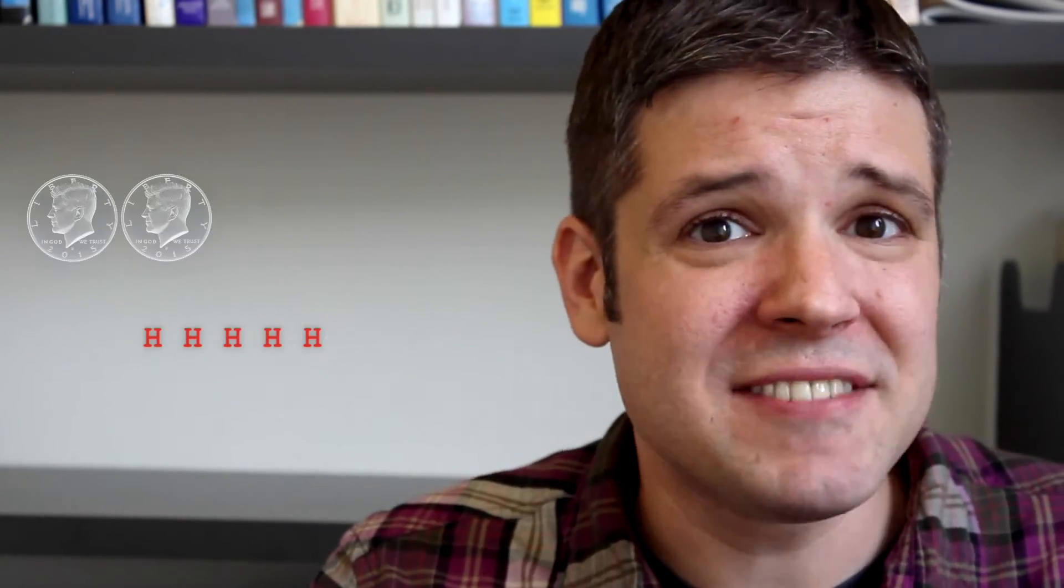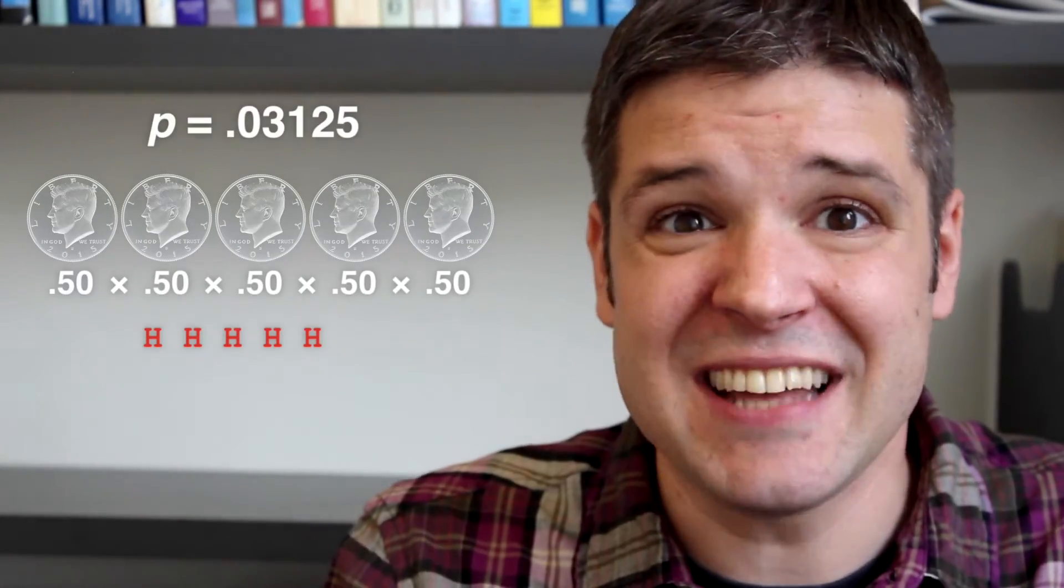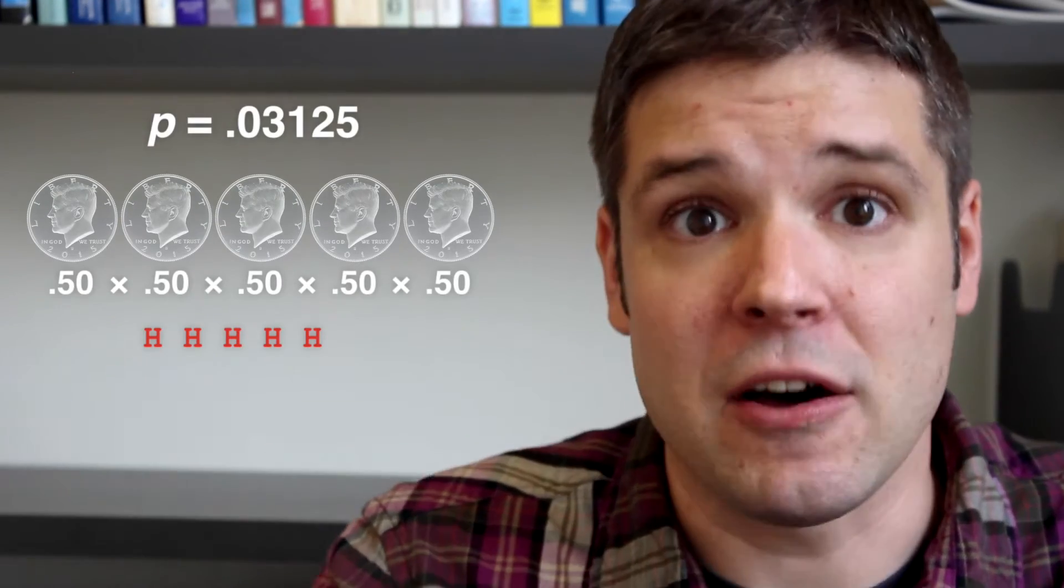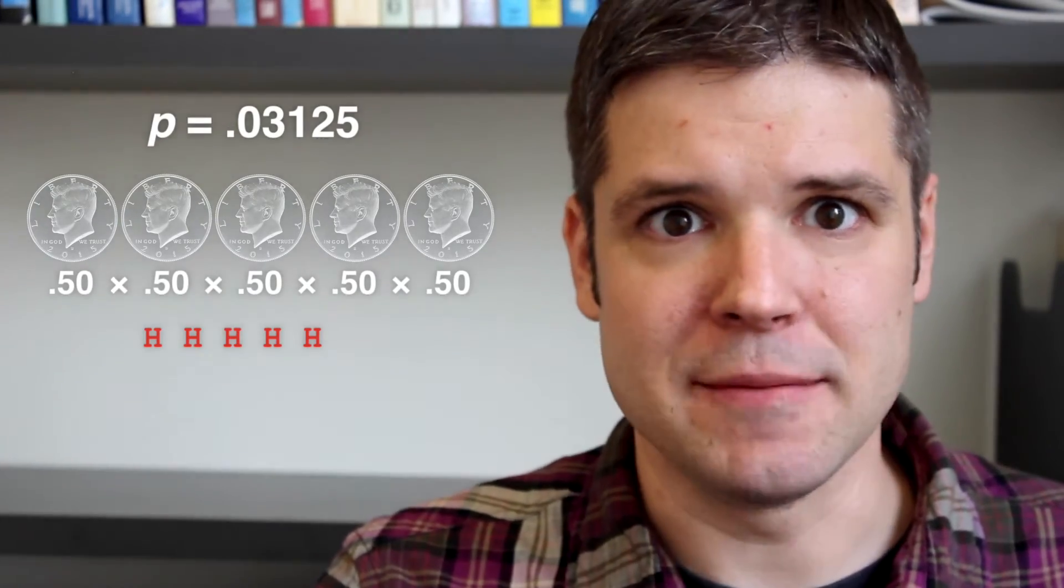you might be able to look through all 100 tosses to see if there's a point at which five heads appear in a row. If you only tossed the coin those five times, there's less than a 5% chance of getting five heads in a row, like we calculated earlier. But you didn't toss it just five times.